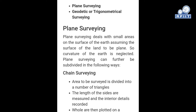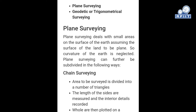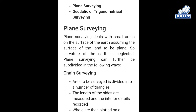Plane surveying can be subdivided in the following ways. First is chain surveying. In this type of surveying, a chain is used to determine the relative position on the surface of the earth. This type of surveying is based upon triangulation, where the area is divided into a number of triangles.